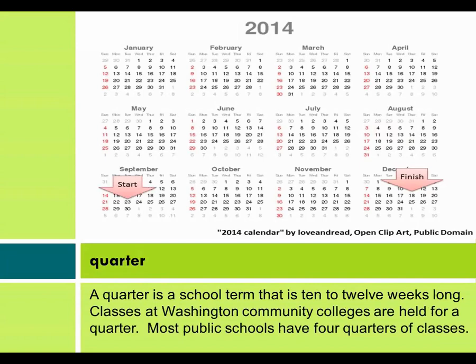Quarter: a quarter is a school term that is 10 to 12 weeks long. Classes at Washington community colleges are held for a quarter. Most public schools have four quarters of classes.